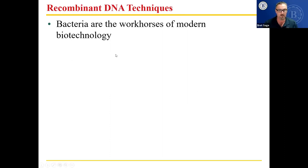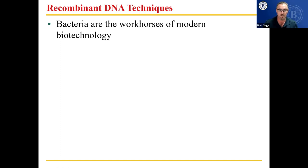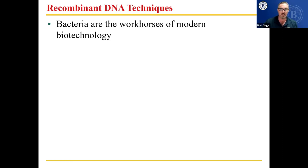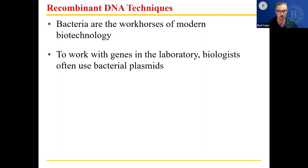Review question: what are the workhorses of modern biotechnology? The answer is bacteria — not horses. Bacteria do the work, as you've seen from this lecture. Bacteria are the main things used to copy genes and make proteins in large quantities.